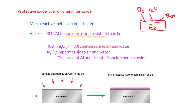For aluminium, it is a different case. When aluminium reacts with oxygen in the air, it forms a layer of aluminium oxide on the surface. Unlike rust on iron, this aluminium oxide layer is impermeable to air and water. That means water and air cannot come into contact with the aluminium underneath, so the corrosion stops. This protective layer prevents aluminium from further corroding.